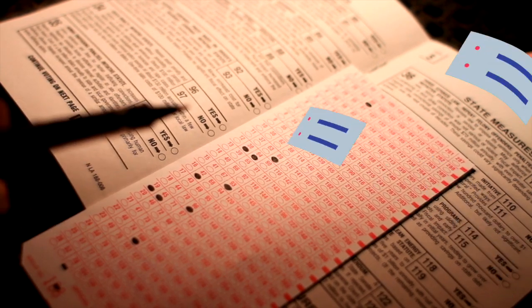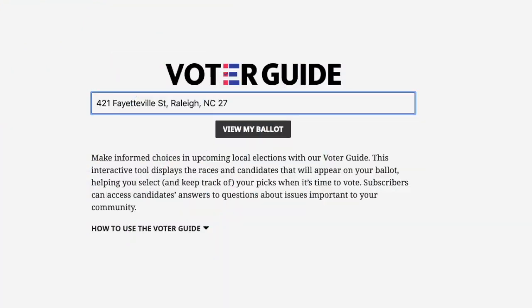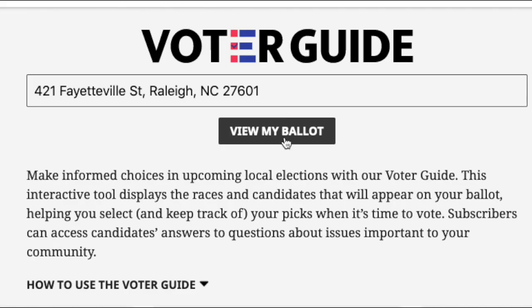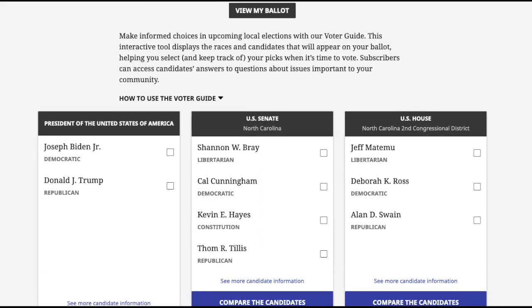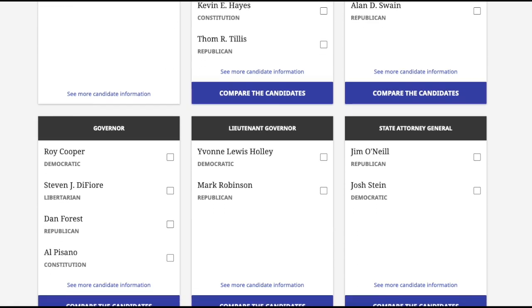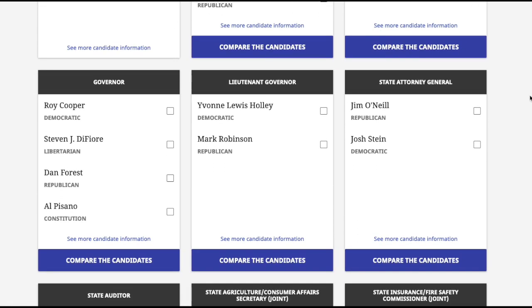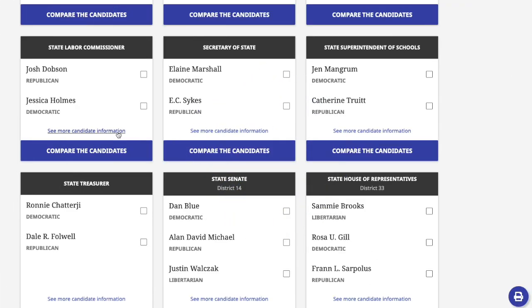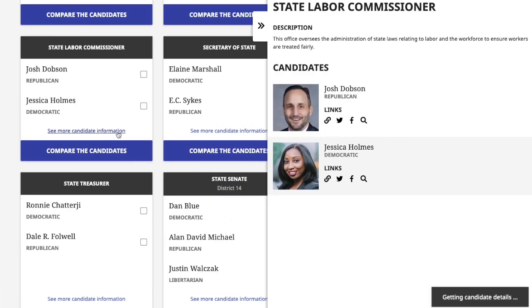Here's how it works. First, enter your home address in the search bar, then click View My Ballot. Scroll down to the boxes below to see each ballot item. Click See More Candidate Information at the bottom of each box to learn more.